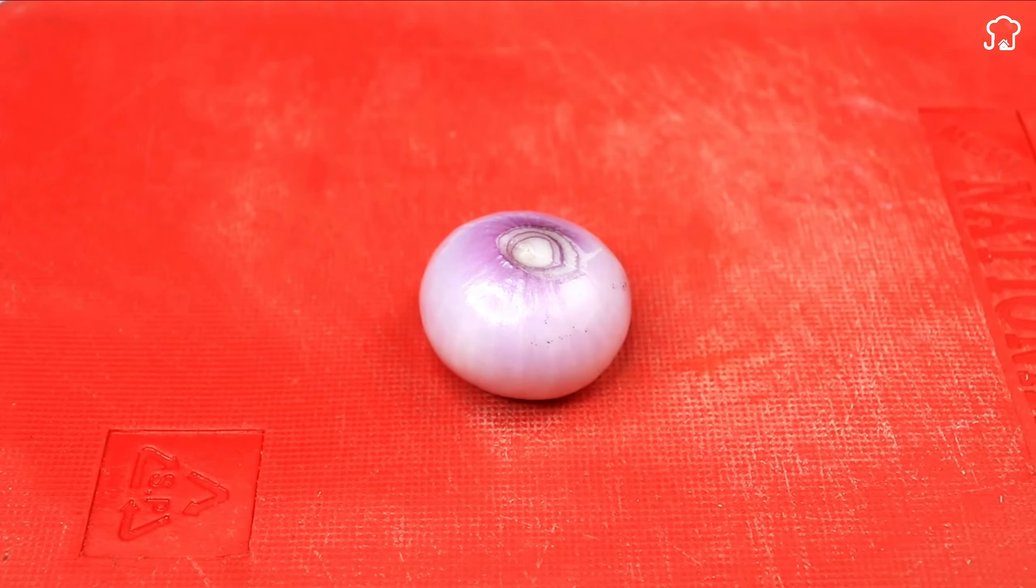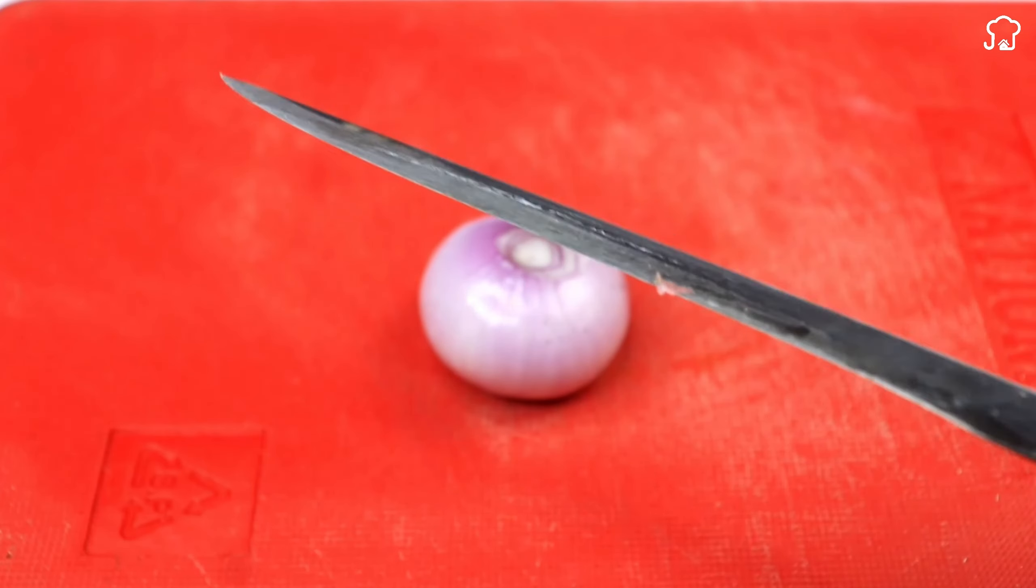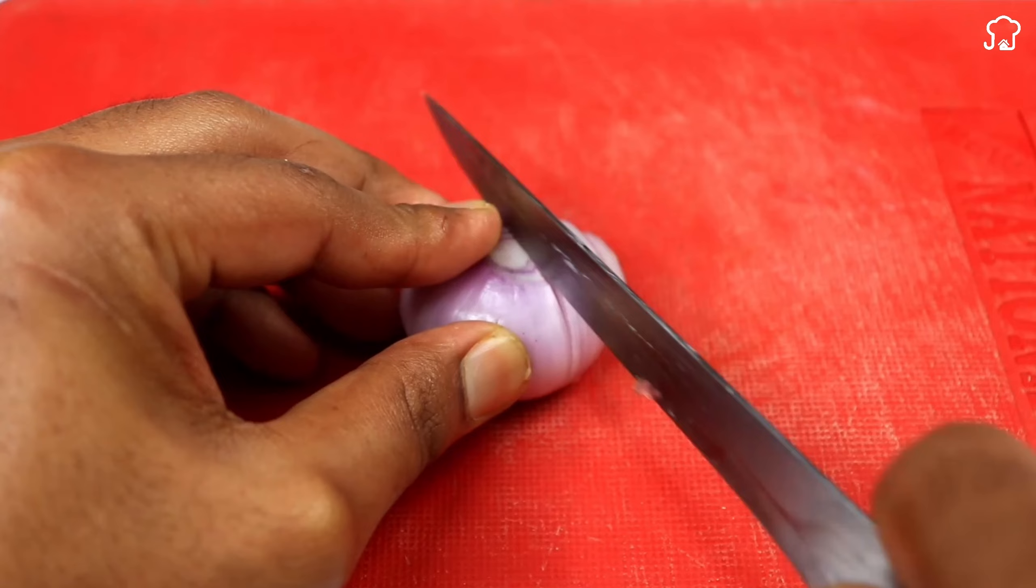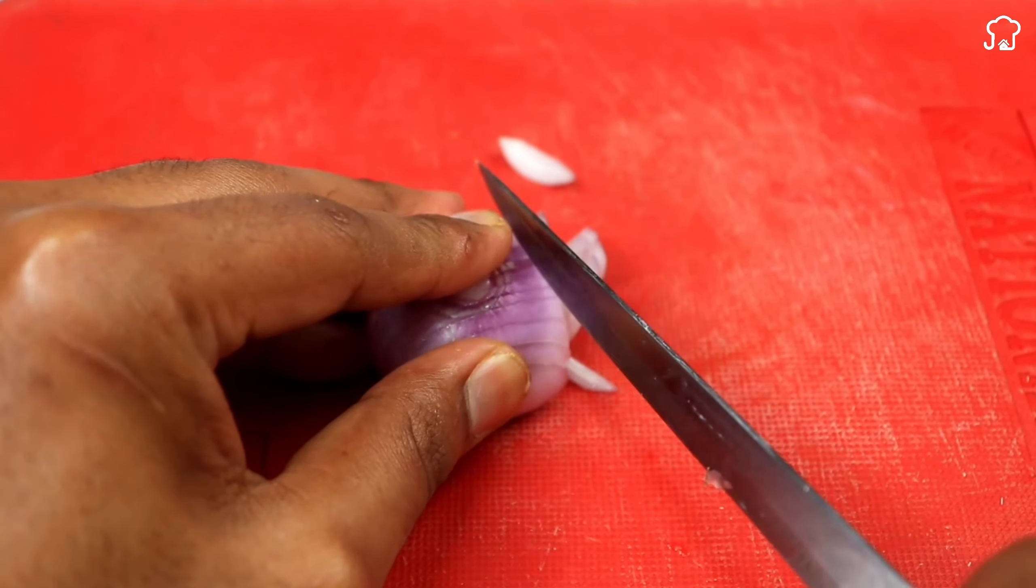To check the effectiveness of sharpening, we will take an onion and test the knife. The onion will allow us to verify that the edge is like new, cutting cleanly and without effort.